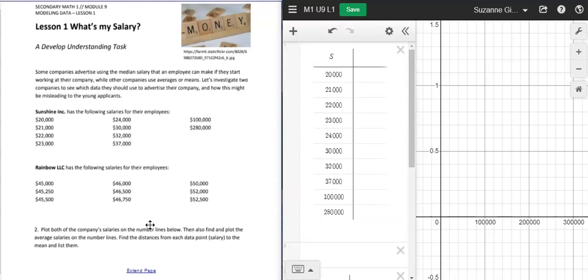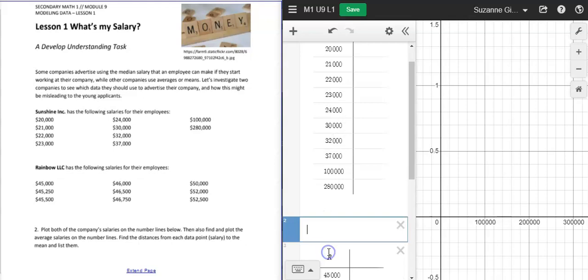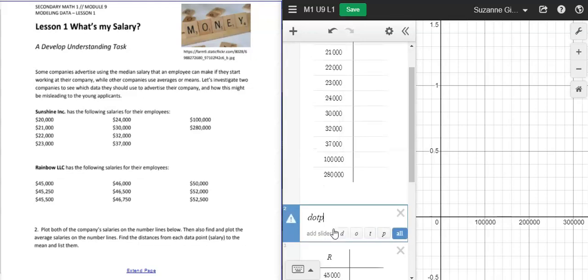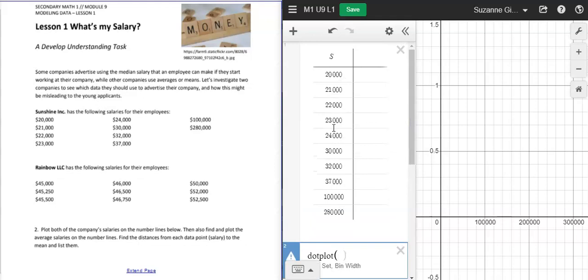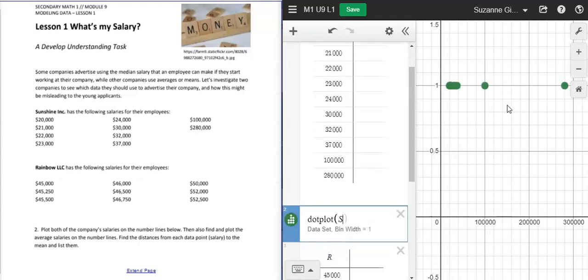To get a dot plot, which is what this is asking, all I have to do is insert an expression and I get a blank box here and I type dot plot. And then I want a dot plot for this set of data. So the variable is S, so I'm just going to type S, and then I have my dot plot listed right here.